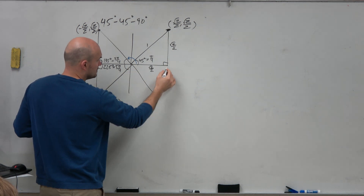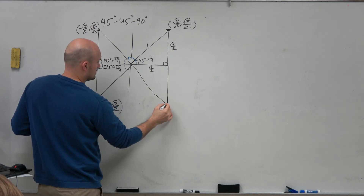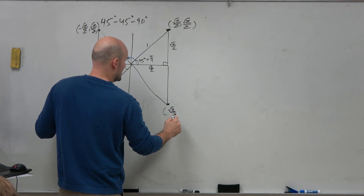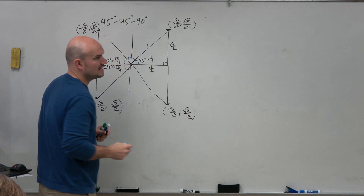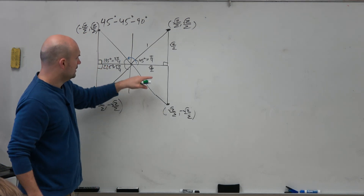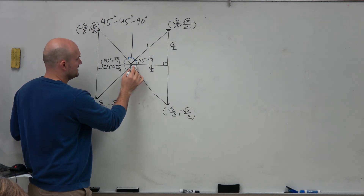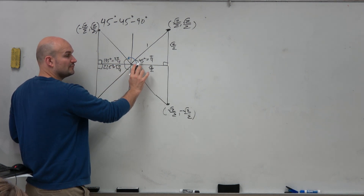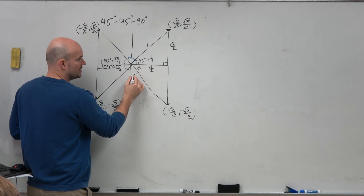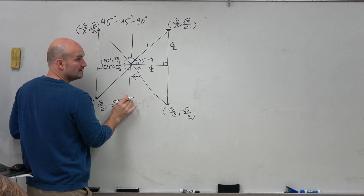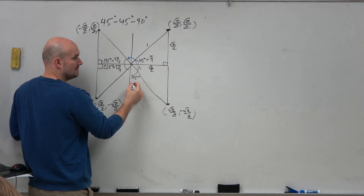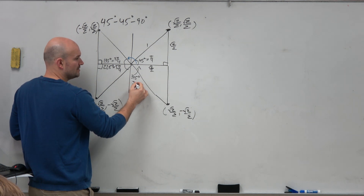We can do one more. This point is going to be positive x, negative y — that's what we learned about the fourth quadrant. All the way around is 360; if we're 45 degrees short of 360, this angle is 315 degrees. If all the way around is 8 pi over 4 and we're pi over 4 short, then we're at 7 pi over 4.